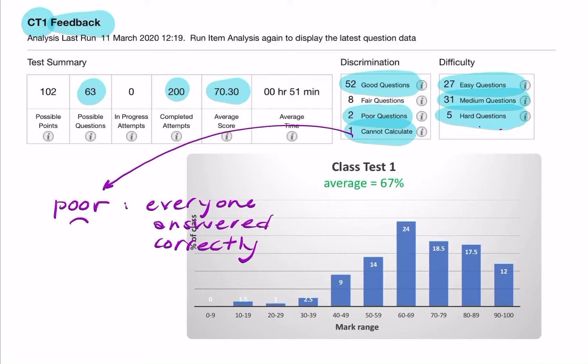Although VITAL considers that to be a poor question, that's good news for you. It means it's a question that was so easy that everybody got right. But it means it's poor in terms of discrimination - it wasn't able to discriminate between students. So 52 out of 63 were good and 8 were fair.